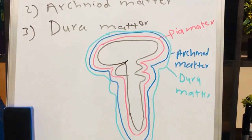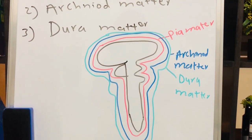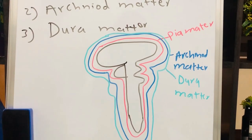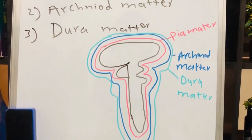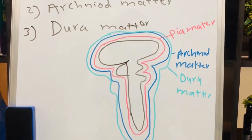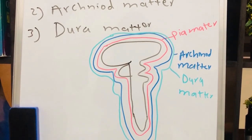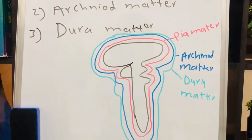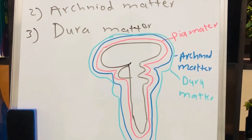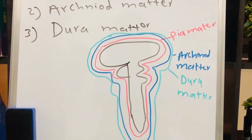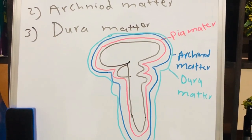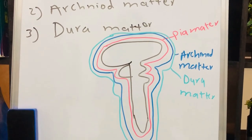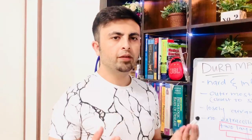The innermost layer, pia mater, is made up of soft connective tissues and it is vascular. The outermost layer, dura mater, is tough and strong and is also made up of connective tissues.